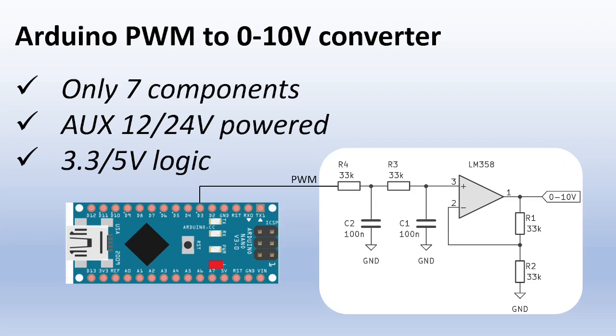Here I connected a motion sensor to the Arduino. If motion is detected, the light is set to maximum brightness.